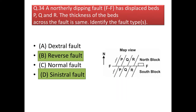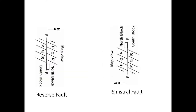Next question: a northerly dipping fault FF has displaced beds P, Q, and R. Identify the fault type. The hanging wall is moving up compared to the footwall, so this is a reverse fault. Looking at the movement, this fault can also be assessed as a strike-slip fault. We have to determine whether it is dextral or sinistral. If you face the fault as shown, the left block (north block) is moving towards you, so it is a sinistral fault. If the right block (south block) had moved towards you, it would be a dextral fault.